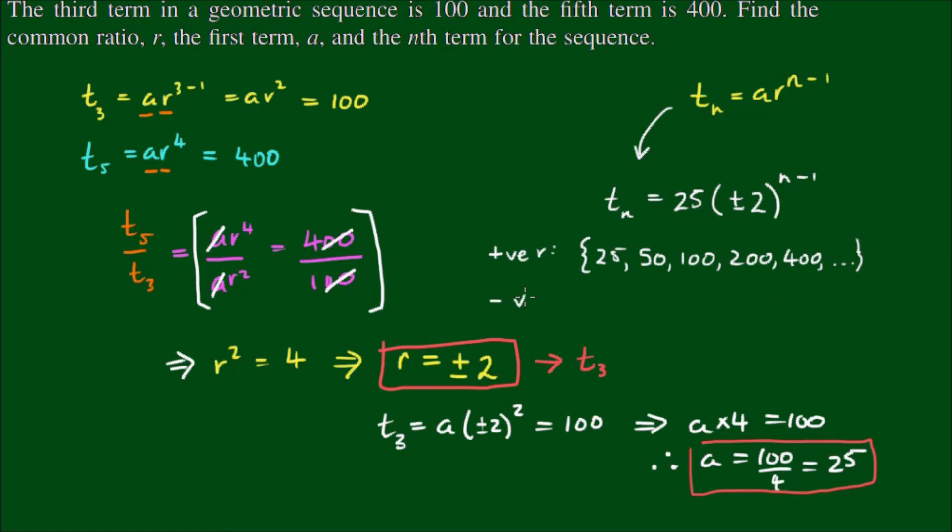If we take the negative value for r, the series will look like 25, starts off with the same number, the second term will be negative 50. So I made a mistake earlier when I said the odd number terms would be negative. It's actually the even number terms by the virtue that we have n minus 1.